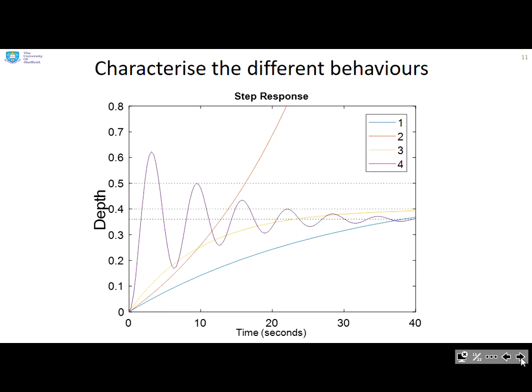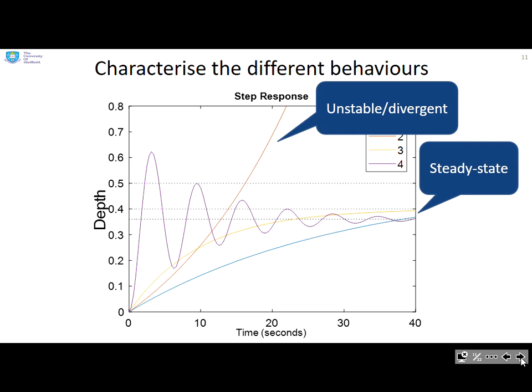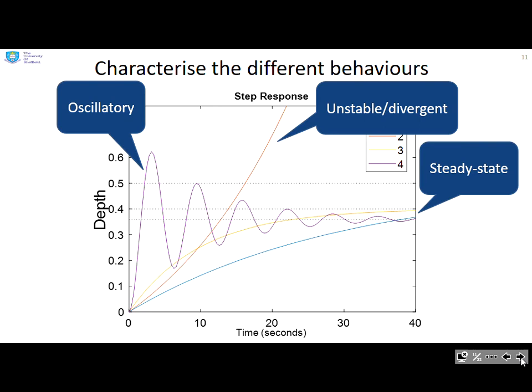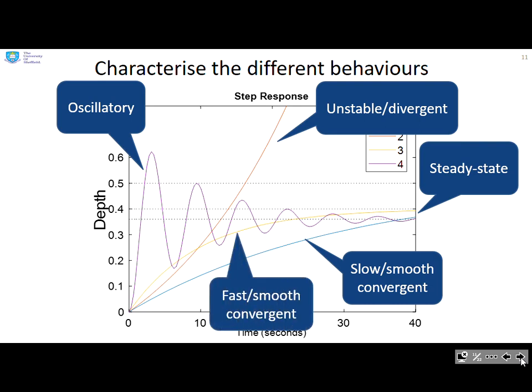So how might we characterize different behaviors? The sorts of characteristics we're interested in are the steady state, where do the signals settle. This one here you can see is unstable or divergent, which is not good. Have we got oscillatory responses? You can see here the response goes up and down a lot. Have we got simple convergent responses which are smooth? This one is slow and this one is fast. So this is really what we mean by characterization, looking at the signals and saying what sort of characteristics do they have.